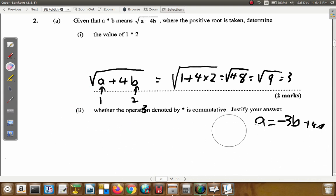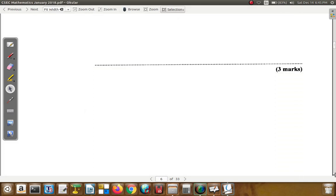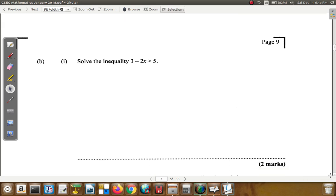But, anyway, enough of playing around with that. Let's go on to the next part of this question. See what it says. 2b. What 2b says here is that you should solve the inequality 3 minus 2x is greater than 5. Let's see what happens.